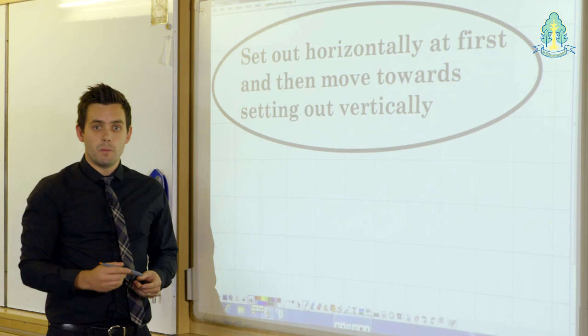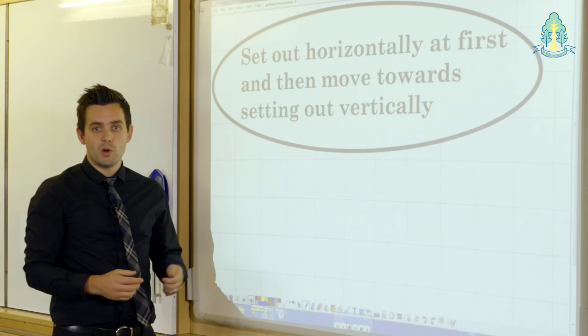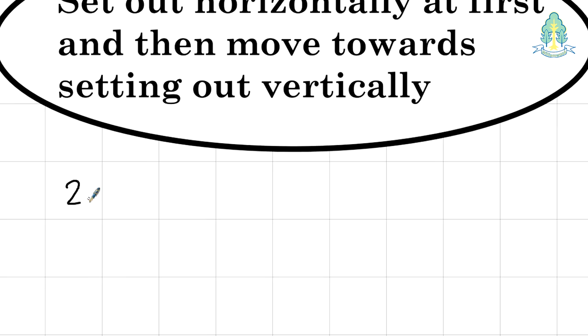Now having worked with concrete materials to introduce the concept of addition, pupils will start to put their working on the page, setting it out horizontally at first, with a view to working vertically downwards when the pupil's number bonds have strengthened and they're a bit more confident with the topic.